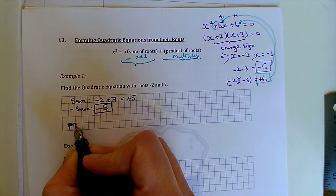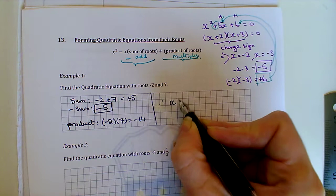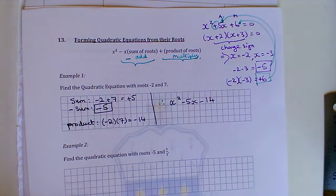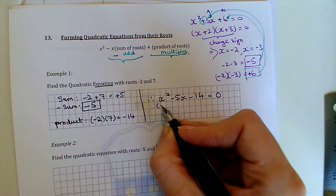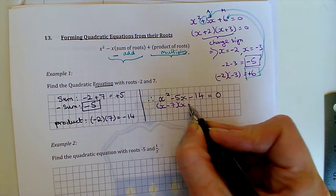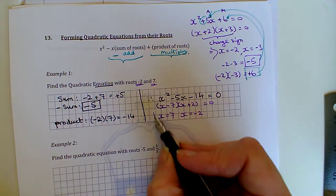And the product of the roots, -2 × +7 gives me -14. So therefore, my quadratic should be x² - 5x - 14. And they asked for an equation equal to 0. So that should be my quadratic equation. You can verify that by going the other way. If we factorize this, we'd get (x - 7)(x + 2). And then we'd solve that by changing the signs. x = 7, x = -2, which is exactly what they gave us for the roots there.